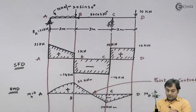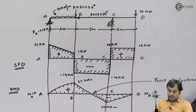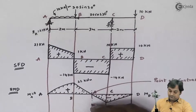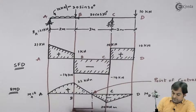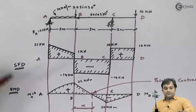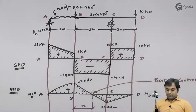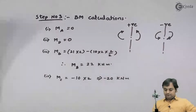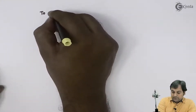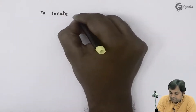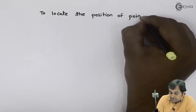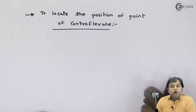Now I will be calculating the location of the point of contraflexure, that is where the bending moment is zero, and I will give the distance to this point. To locate the position of the point of contraflexure, I would be using the concept of similarity of triangles.